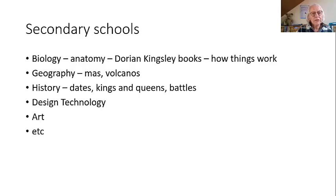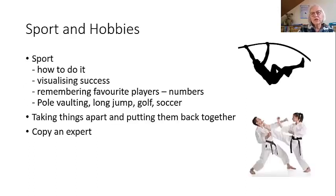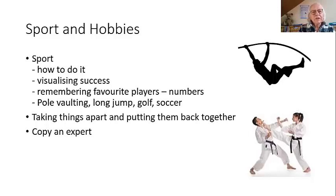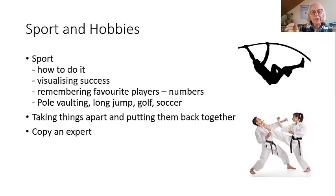Then we come to sports and hobbies. I remember being taught that footballers score goals by visualizing the back of the net moving before they kick the ball. It's really important they have the skill to visualize. They can visualize success, visualize breaking the tape to come in first. They can also visualize their favorite players — and interestingly, if you turn a favorite footballer around, their name and number are written on the back, so you start visualizing words and numbers.